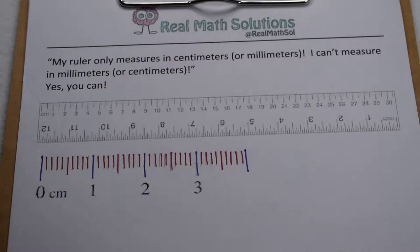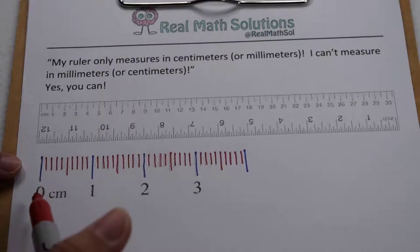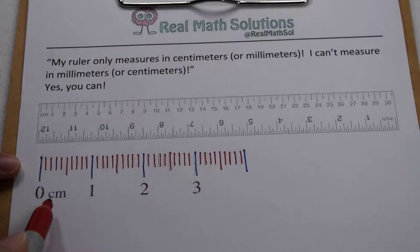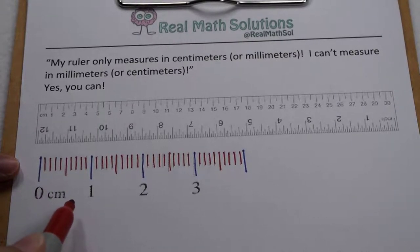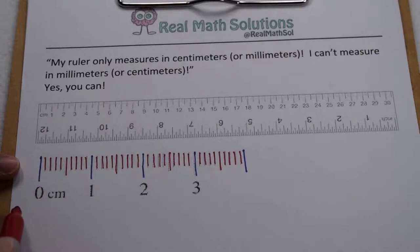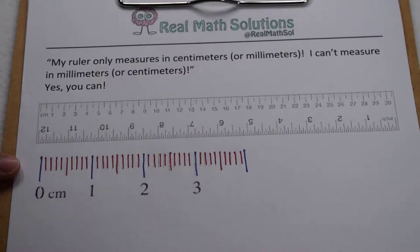Every teacher has that one question that comes back to them every year no matter what. One of mine was always on the metric side of our ruler, coming up and being told my ruler only measures in centimeters, or if this was a little mm here, being told my ruler only measures in millimeters. Then we'd stop again and go back over as to how the ruler showed both. So let's go through and look at those.